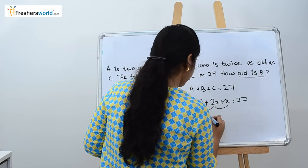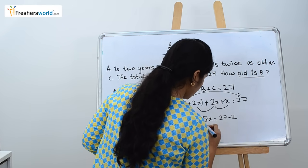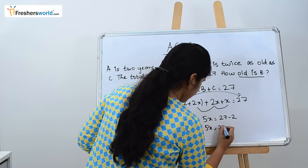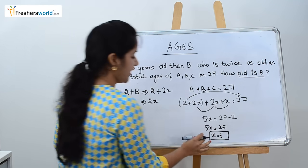So 5X, we take 2 here. 27 minus 2, 5X equals 25. X equals 5.